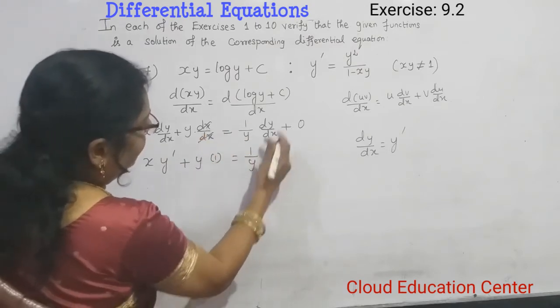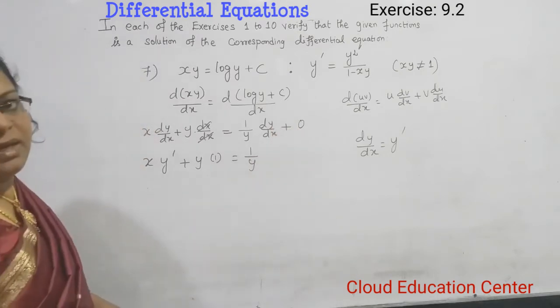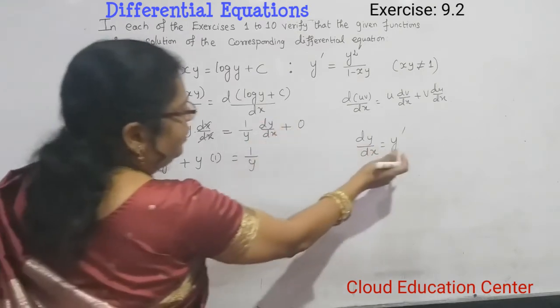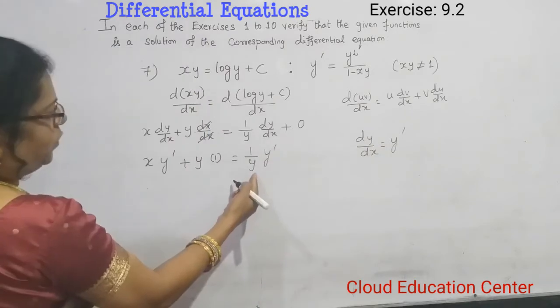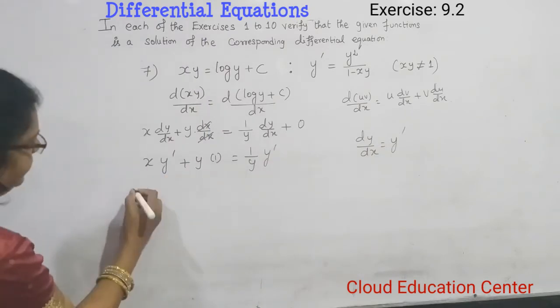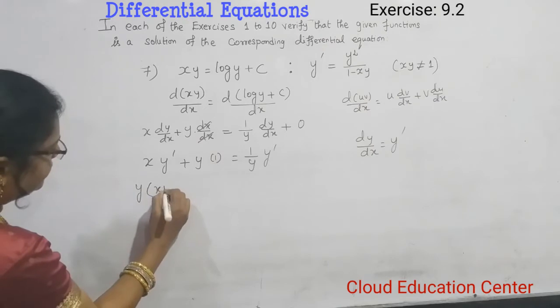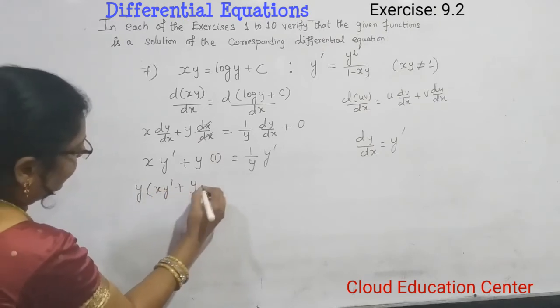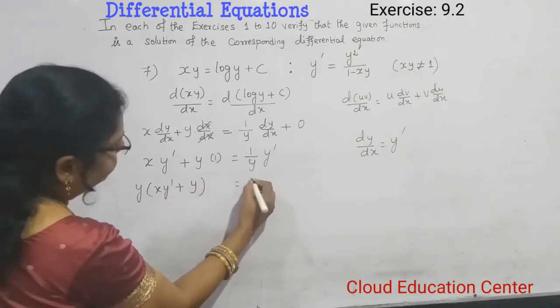y dash plus y, dx by dx is 1. Now, 1 by y. Here also dy by dx is there, so we substitute y dash. Here, y is there. This y we're moving to the left-hand side. So y times x y dash plus y equals y dash.